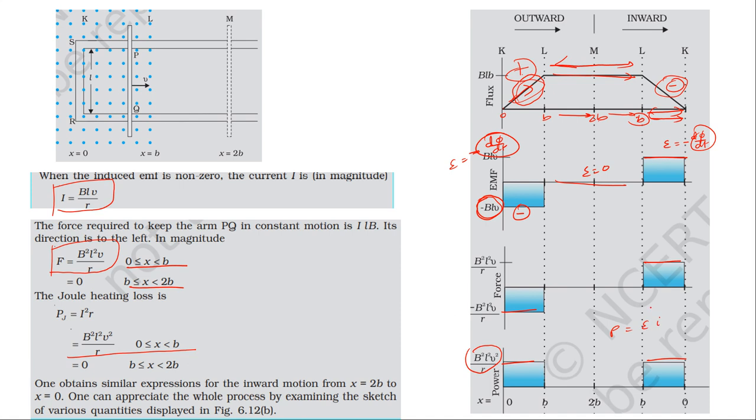Power equals EMF times current. In the first case, EMF is negative and current is negative, so negative times negative gives positive power. In the second case, EMF is positive and current is positive, giving positive power. When there is no flux change, EMF is zero, so power is zero.